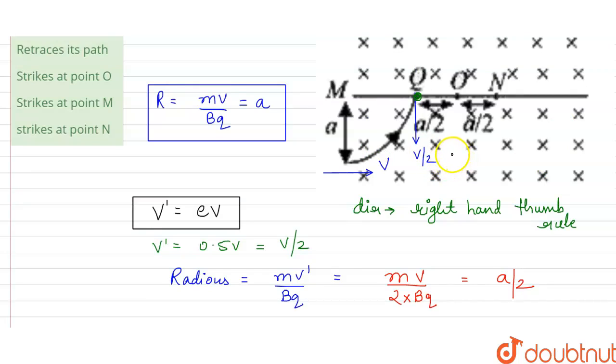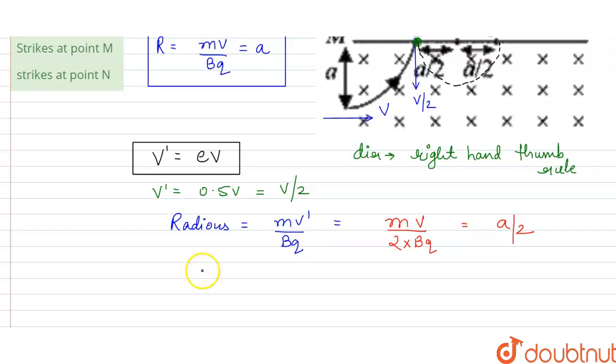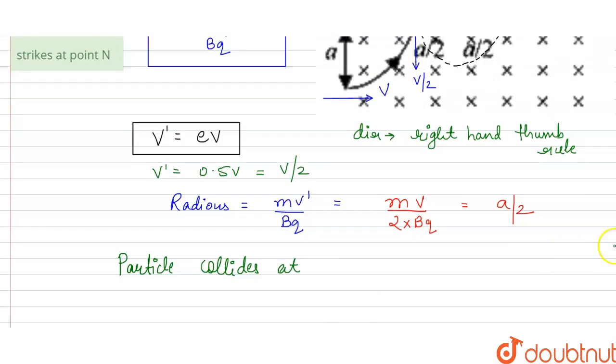So our magnetic field is into the plane and the velocity is in the negative y direction. So we can say that the path of this particle is like this. Where A by 2 is the radius of that trajectory. This is our A by 2.